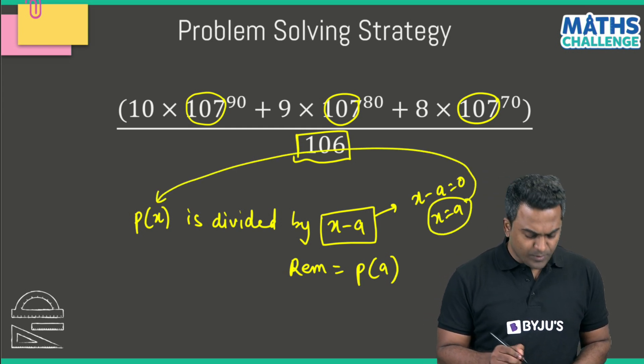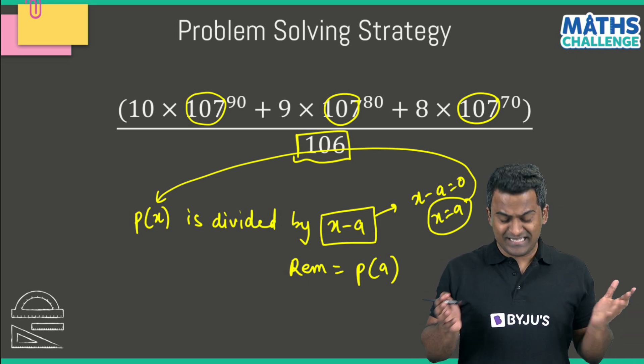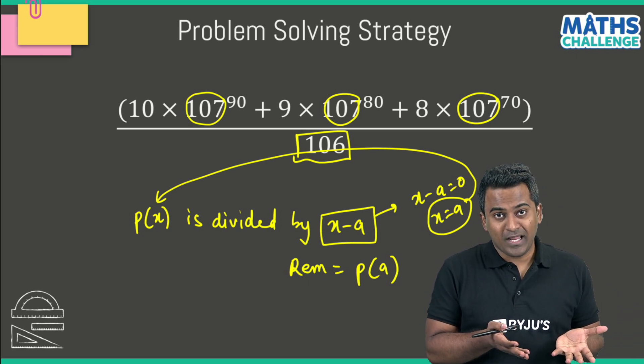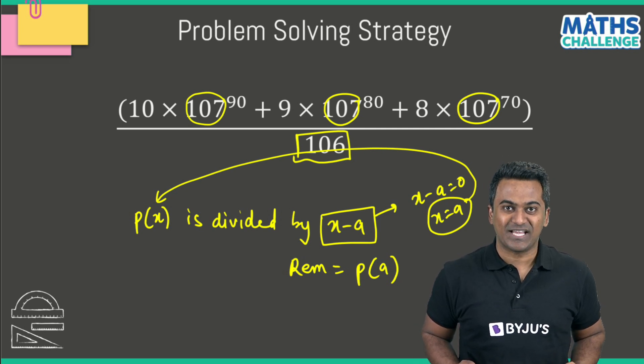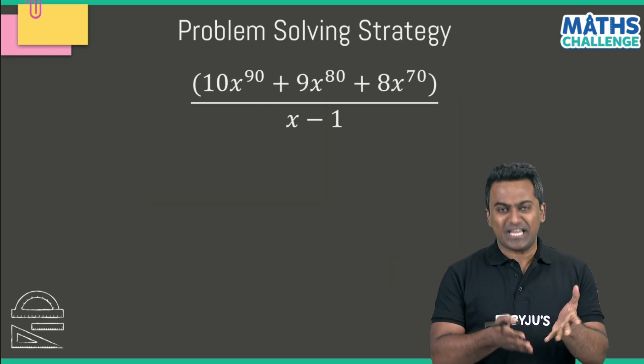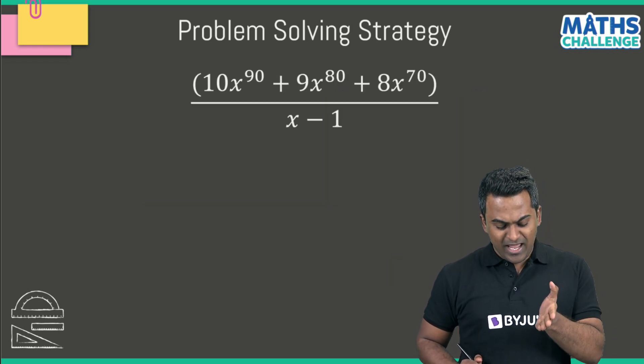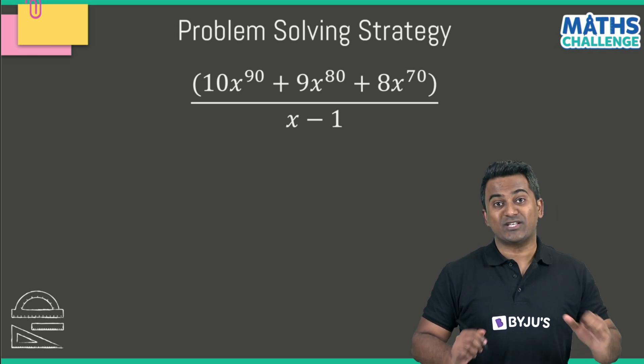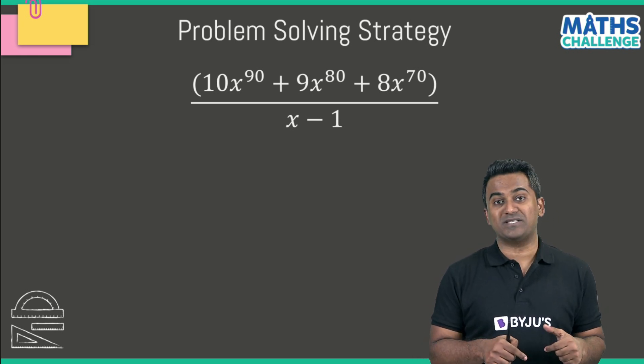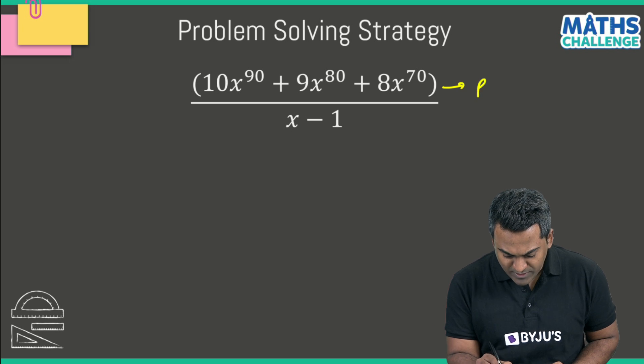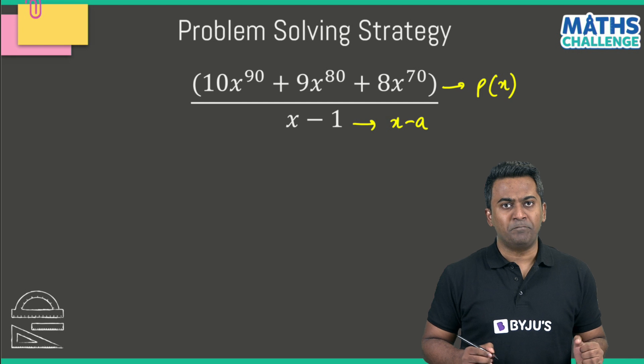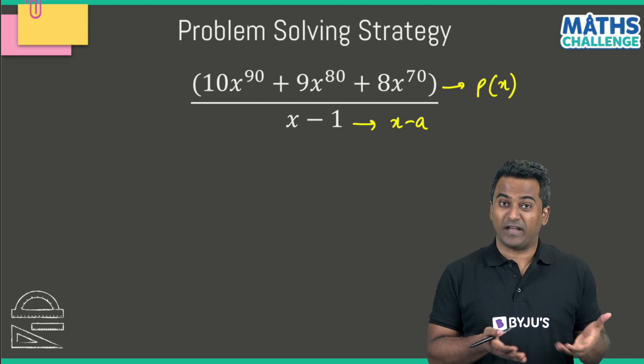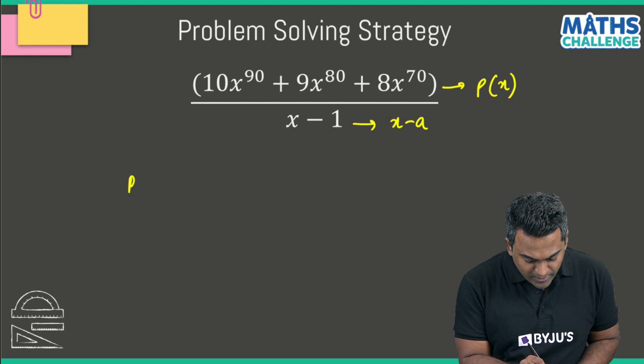You must be wondering, this is a numbers problem—how are you trying to relate it to an algebra problem in x? You'll see that now. Instead of this, let's suppose I give you this question: 10x to the power 90 plus 9x to the power 80 plus 8x to the power 70 divided by x minus 1. If you consider this as p(x) and this as x minus a, you can fairly simply figure out the remainder. The remainder, as per the remainder theorem, is simply going to be p(1).